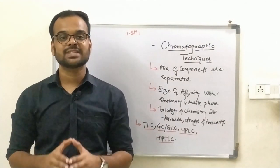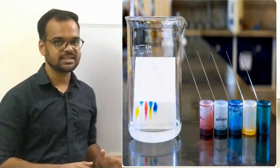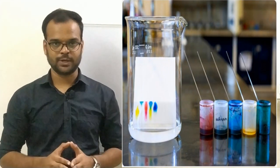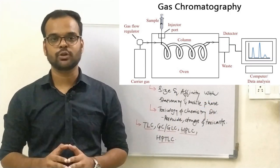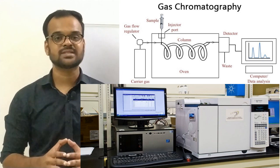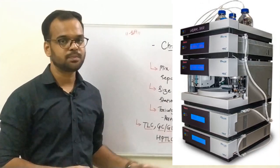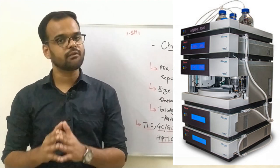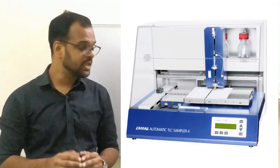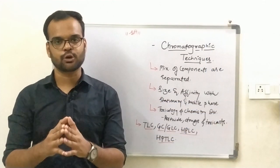The various instruments in the category of chromatographic techniques are TLC that is thin layer chromatography, then GC that is gas chromatography which is also known as GLC that is gas liquid chromatography, then HPLC which means high performance or high pressure liquid chromatography, and last one is HPTLC that is high performance thin layer chromatography.